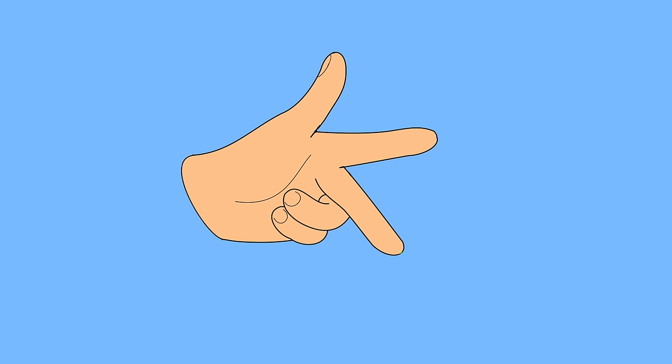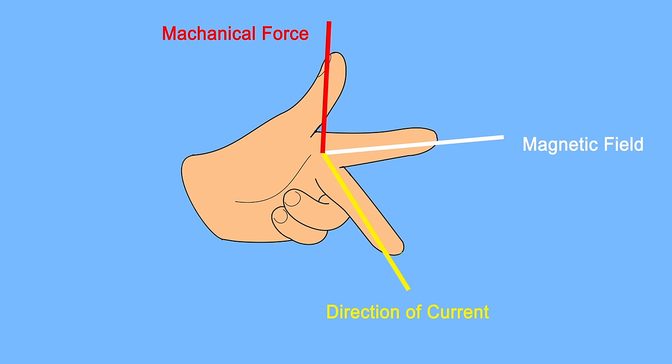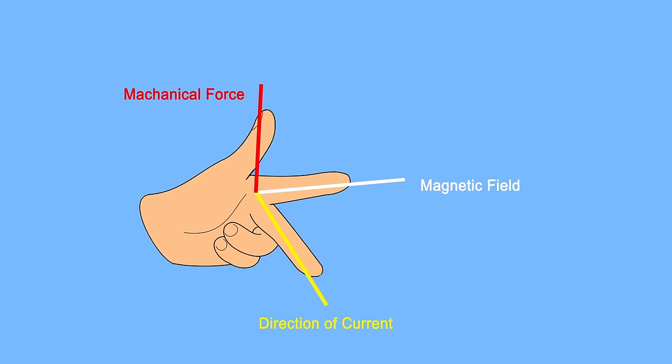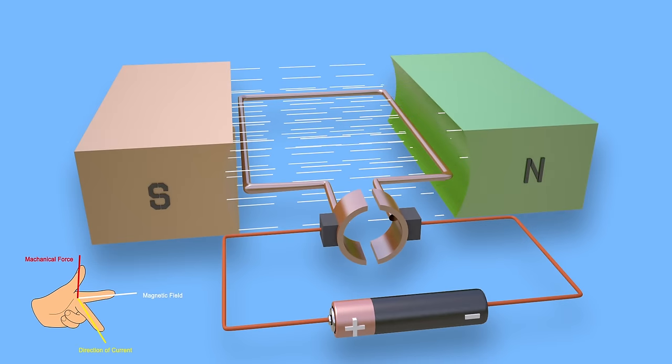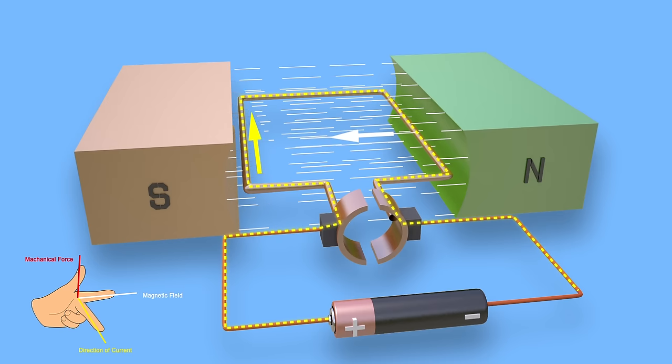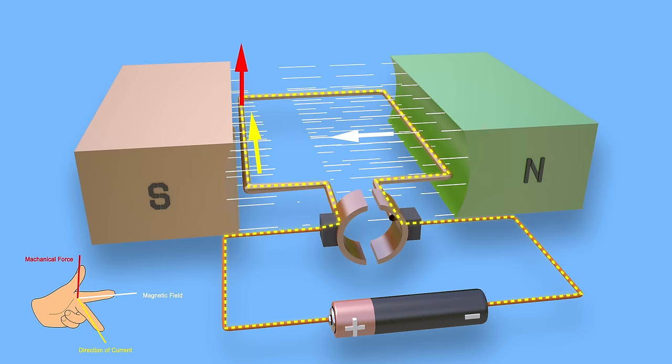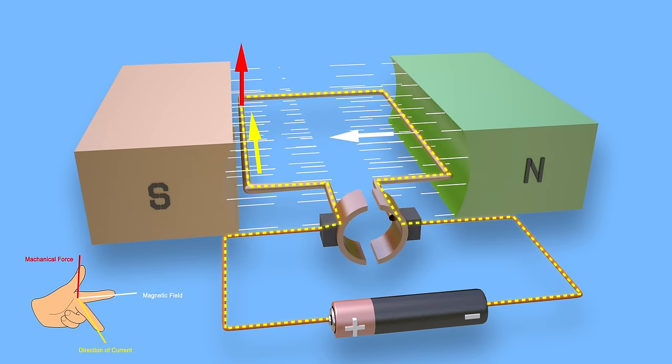To do this, spread out your left thumb, forefinger, and second finger so they are all at 90 degrees to one another. If the forefinger is aligned in the direction of magnetic field from north pole to south pole, and the second finger is aligned in the direction of current in the left side conductor, then the thumb indicates the direction of mechanical force, which is clearly upward here.